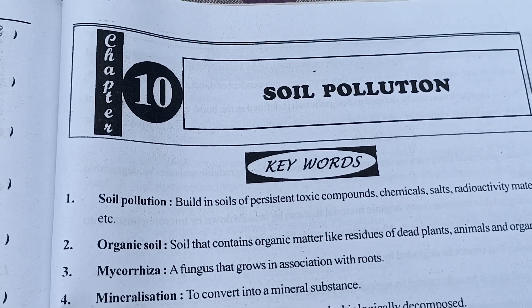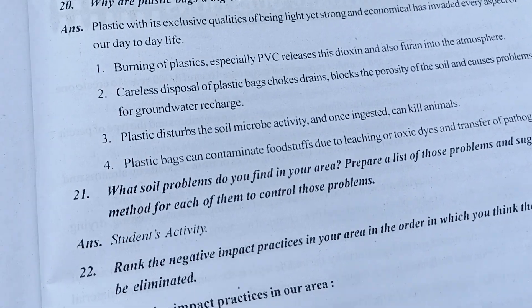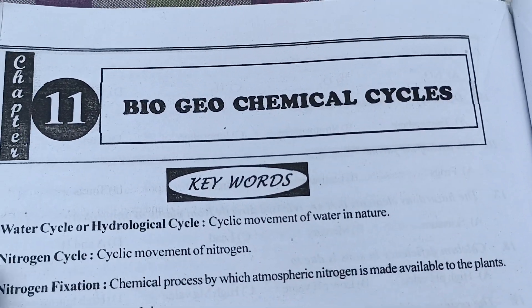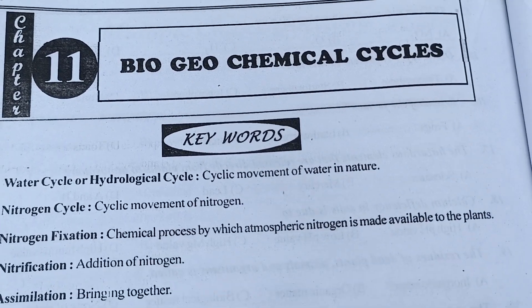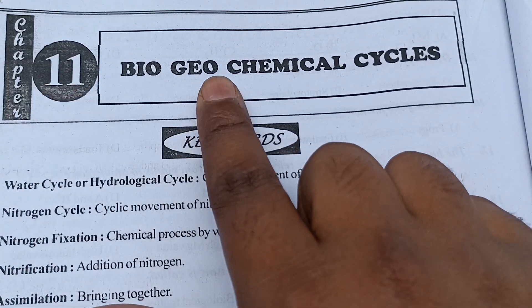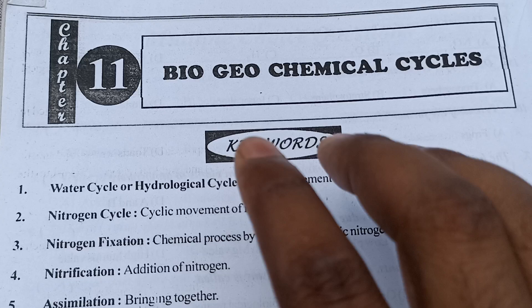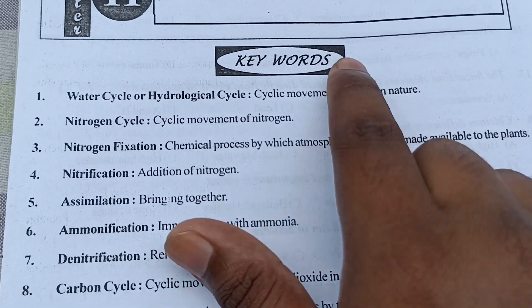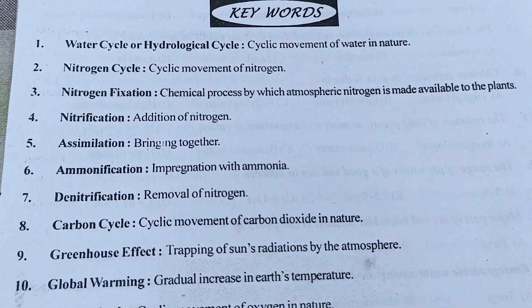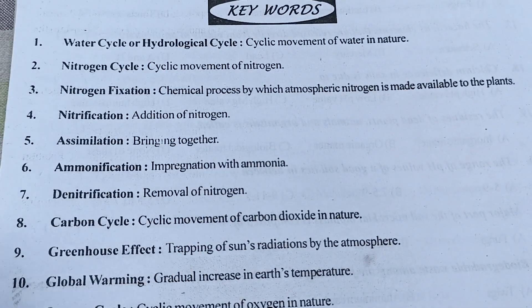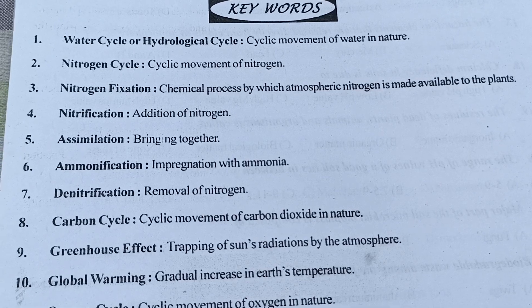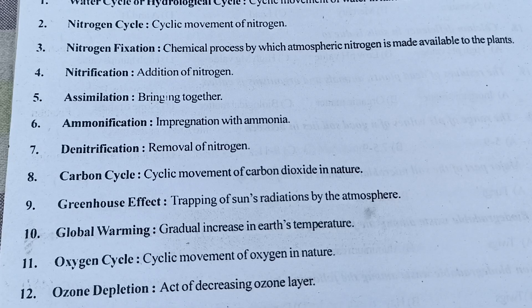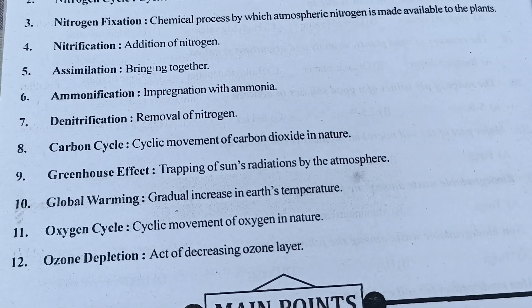So you can see this is chapter number 11 - Biogeochemical Cycle. This is our chapter 11 Biogeochemical Cycle and these are the keywords. The biogeochemical cycle chapter is presented in a specific way here, so I hope the keywords are clear for you all.